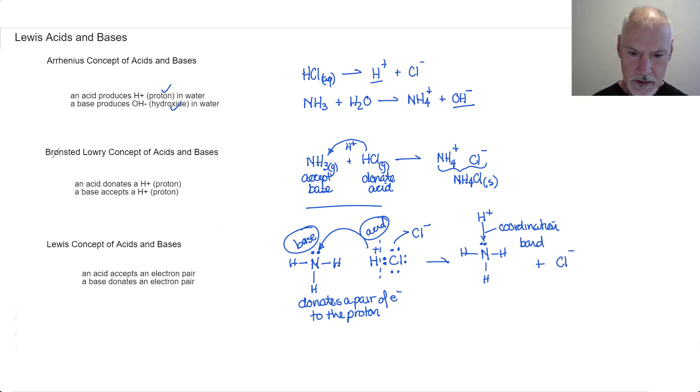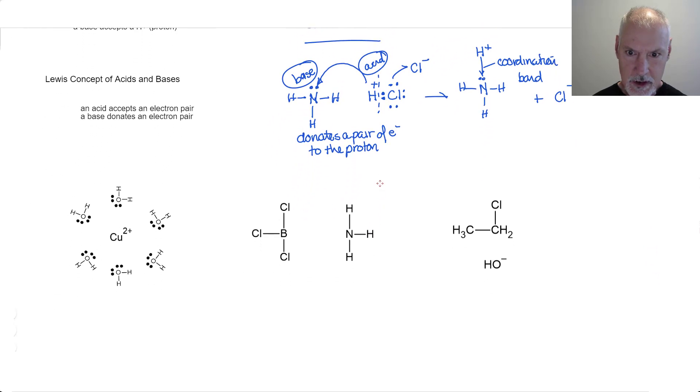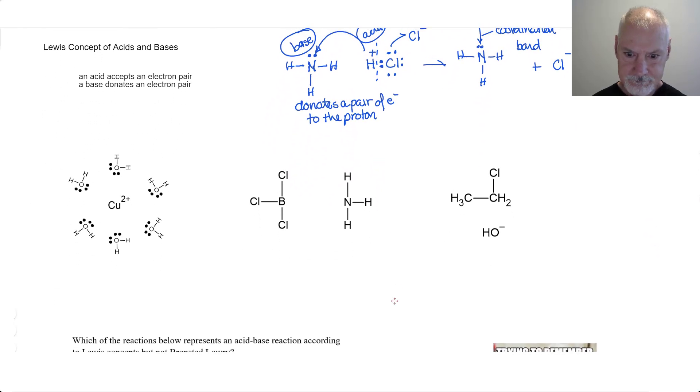I want to look at a few more of these examples with electron pairs. Perhaps a little bit more complicated. Copper ions are capable of attracting pairs of electrons from substances we call ligands. Ligands are substances that can donate pairs of electrons.